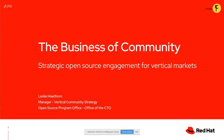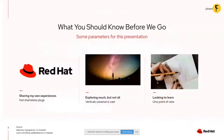A brief about me. I am a manager of the vertical community strategy team within Red Hat's open source program office. We reside in the office of the CTO, and my team's mission is to steward Red Hat's relationship with the various organizations that relate to our verticals-based business from a community perspective. Before we get started, I wanted to share some parameters so we all know what the material for today is going to look like.